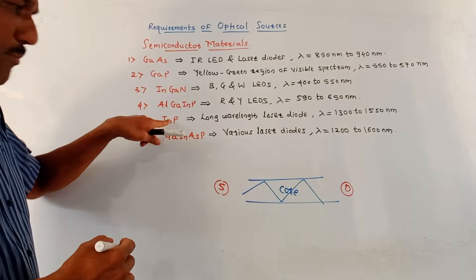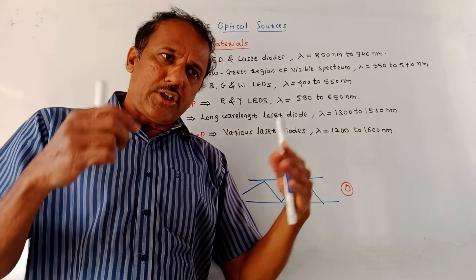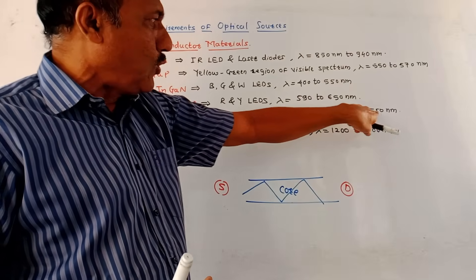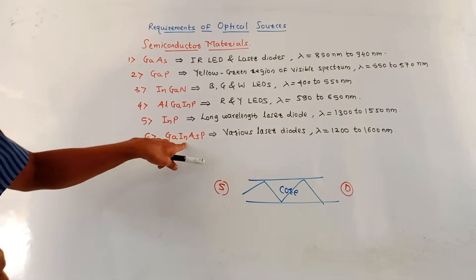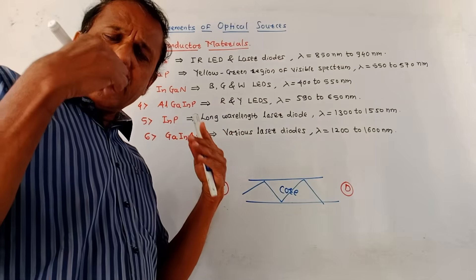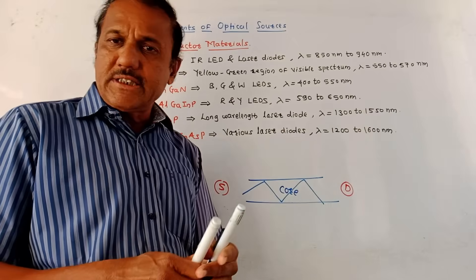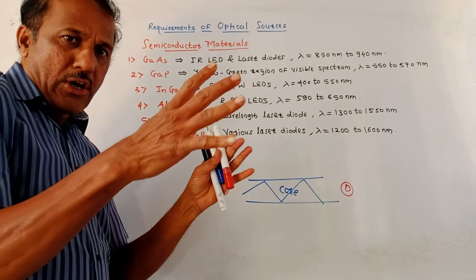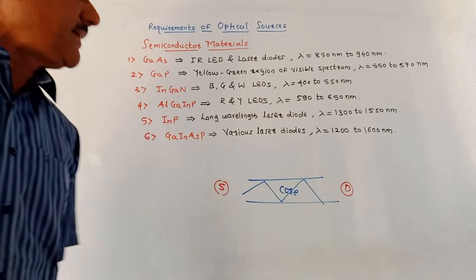Next is indium phosphide, used for longer wavelength laser diodes, with a wavelength range of 1300 to 1550 nanometers. Next is gallium indium arsenide phosphide, used in various types of laser diodes, with a wavelength range of 1200 to 1600 nanometers. These are the general semiconductor materials used for the generation of light rays in LEDs and laser diodes.